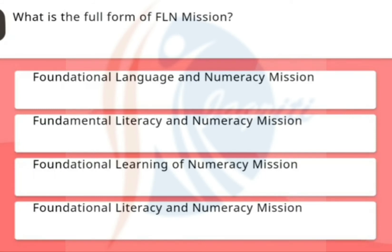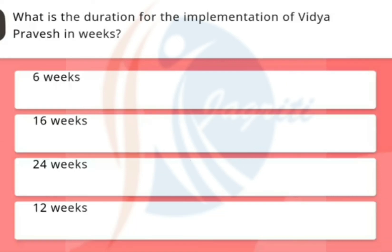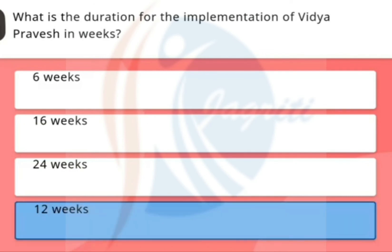What is the full form of FLN Mission? The correct option is Foundational Literacy and Numeracy Mission. What is the duration for the implementation of Vidya Pravesh in weeks? The correct option is 12 weeks.